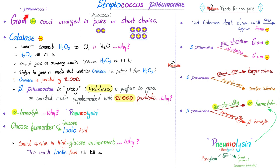They are catalase negative — they do not possess catalase, so they cannot convert the harmful hydrogen peroxide into harmless oxygen and water. Therefore, if you put the bacteria in a medium containing hydrogen peroxide, it will destroy the bacteria. This bacteria cannot grow on ordinary media because it is subject to hydrogen peroxide. What should you do? Provide the bacteria with a medium that contains catalase — like blood and blood products.